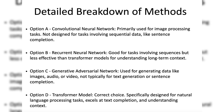Let's take a look at each option one by one. Option A, convolutional neural network: CNN is primarily used for image processing tasks such as image classification, object detection, and segmentation. It is not designed for tasks involving sequential data like sentence completion.